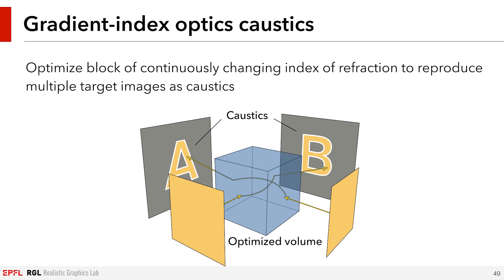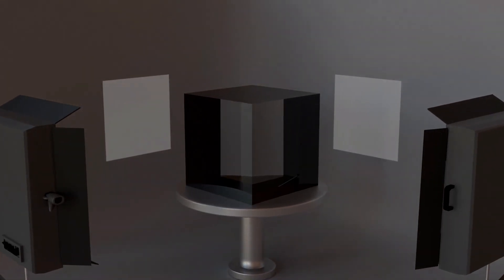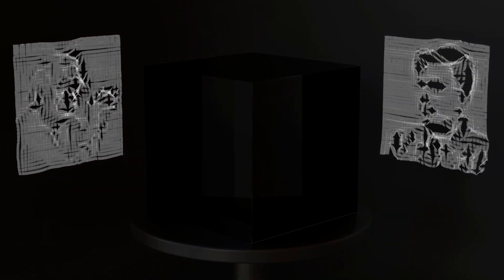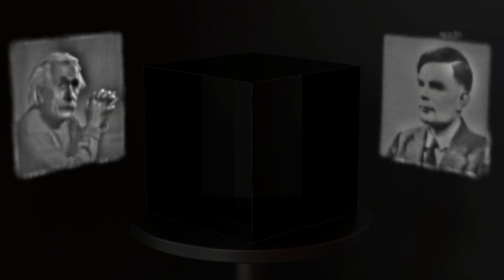Differentiable rendering is a very flexible tool and can be used to tackle novel problems. In this example, we optimize a lens with a continuously changing index of refraction, which means rays inside propagate along curved trajectories. These types of optics are also called gradient index optics. We optimize the IOR to reproduce two different caustics from a single lens. Using Mitsuba 2, we again only had to implement a simple forward rendering method, which then allows optimizing the IOR values using gradient descent. It's important to note that previous caustic design methods are not able to handle this setting and are most likely very difficult to extend to it.